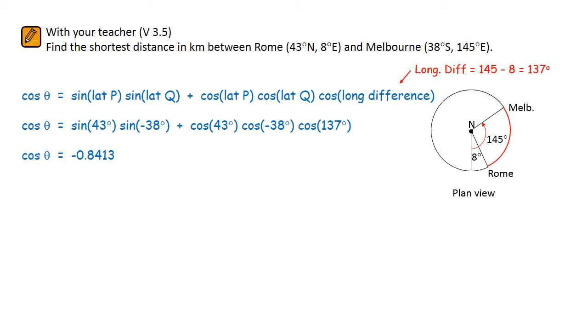You'll get a value for the cos of θ and then you'll use the inverse cos to find out that θ is equal to 147.28 degrees. This is the angle subtended at the earth centre when a journey is made from Rome to Melbourne.